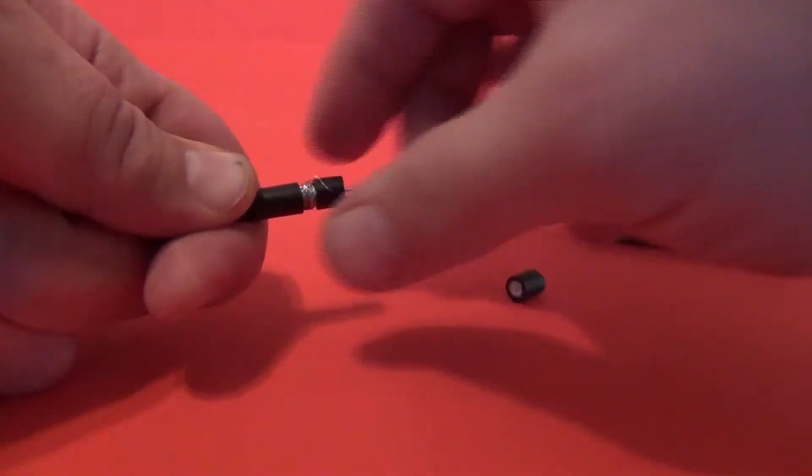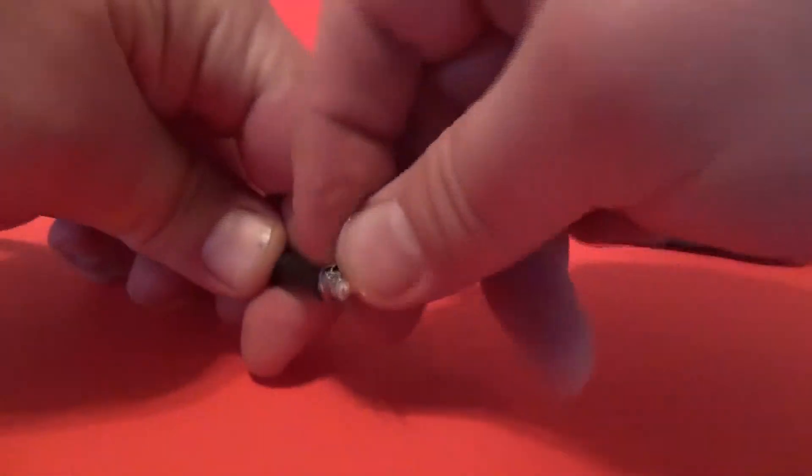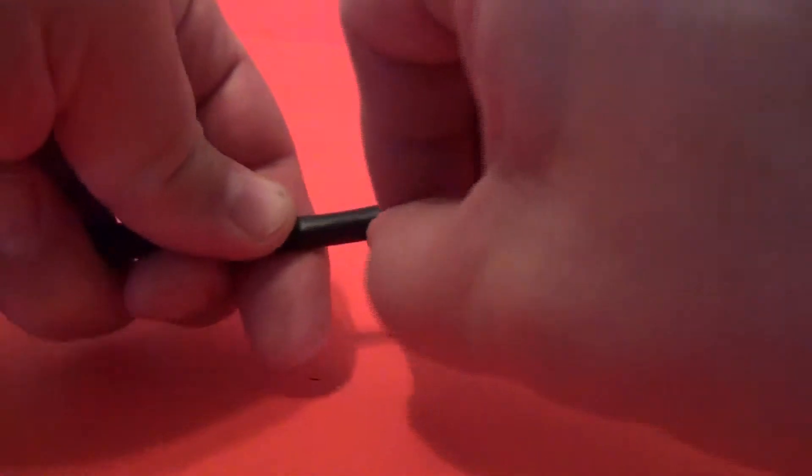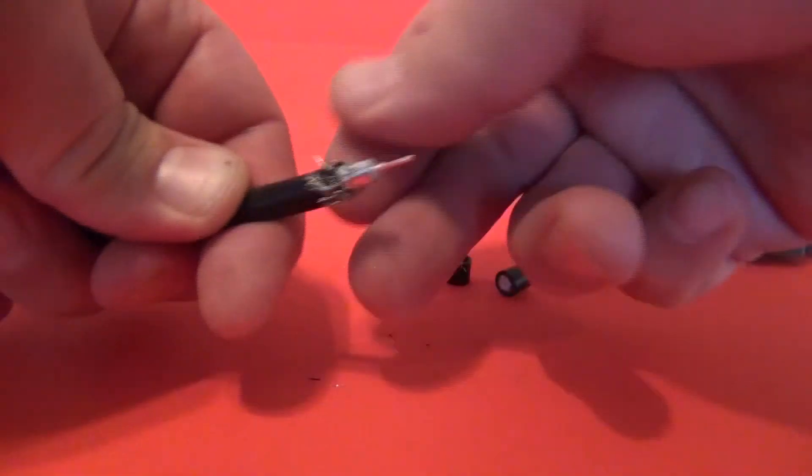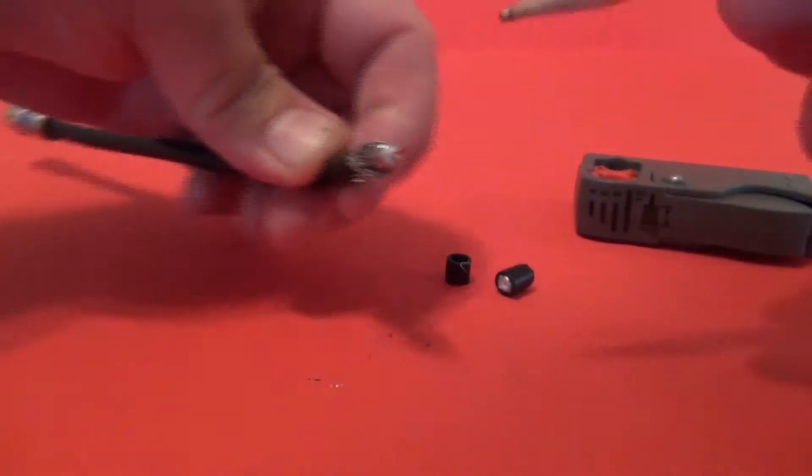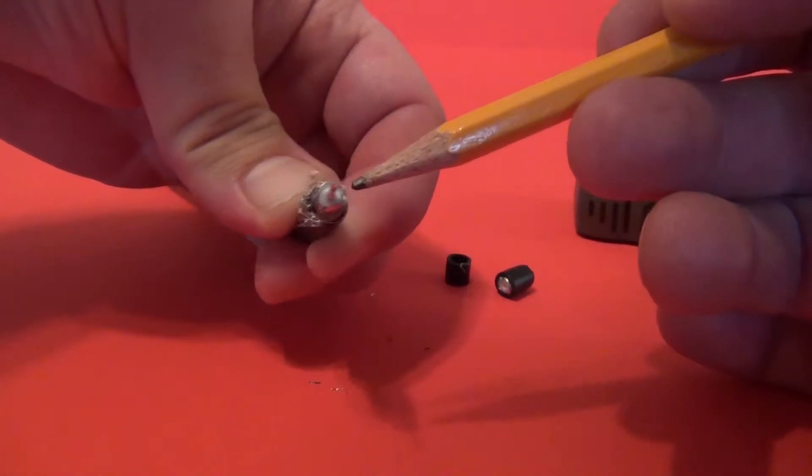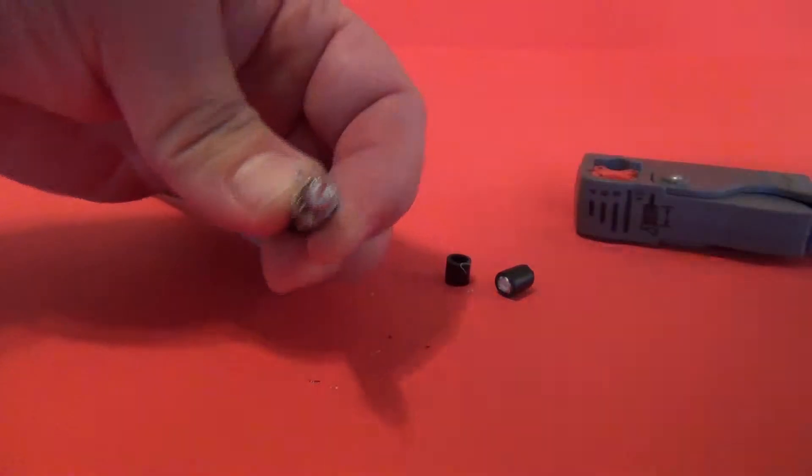Slide off your dielectric and your outer jacket. Peel back the braid or shield. Make sure you inspect the dielectric. Make sure there's no extra foil or braid shorting out to the center conductor.